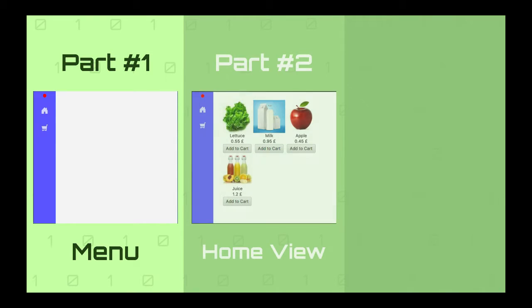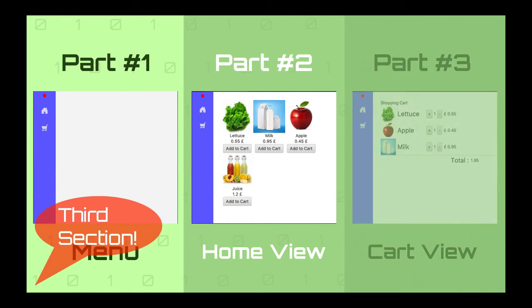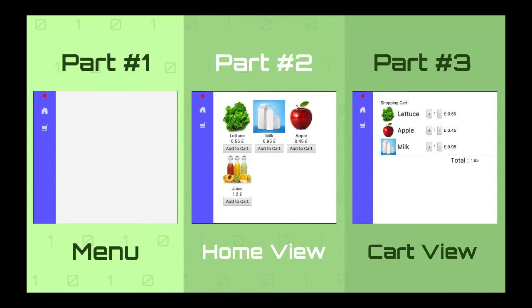This tutorial is going to be divided into three parts. In the first section we will create the main window and the menu. In the second part we will create a view that will display all products available. And in the third section we will be working on creating a view to display the shopping cart. Each of these sections is going to be a different video. So let's start with the first section — let's create the main window and the menu.